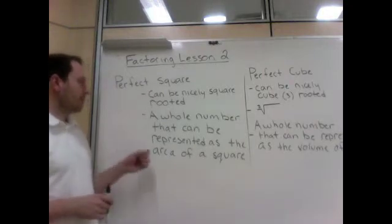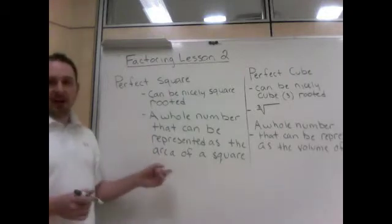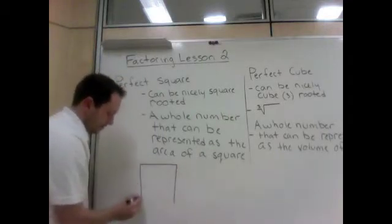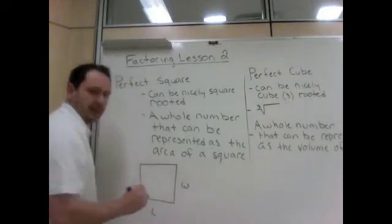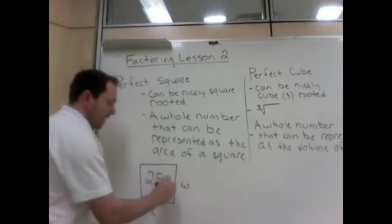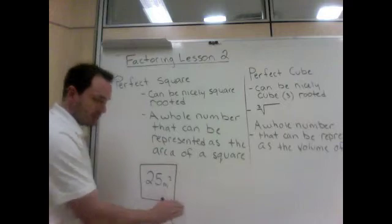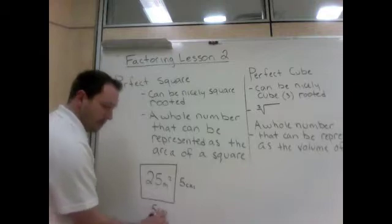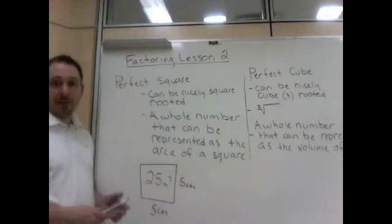No decimals or fractions. And a whole number, another definition, a whole number that can be represented as the area of a square, and that's why it's called a square root. If I took a square, the area of a square is length times width, so if the square area might be 25 meters squared, it's a perfect square because the two sides are nice whole numbers. Five times five would give us our area of 25 meters squared.